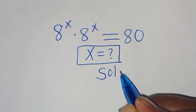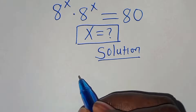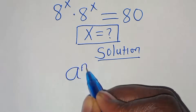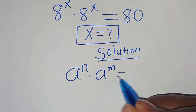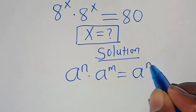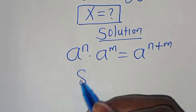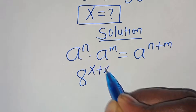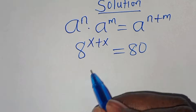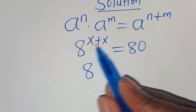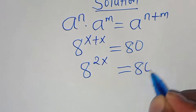Now let's provide a solution. This exponential equation is in the form of a to the power of n times a to the power of m, which we can express as a to the power of n plus m. So we have 8 to the power of x plus x, which is 2x. This is equal to 80.